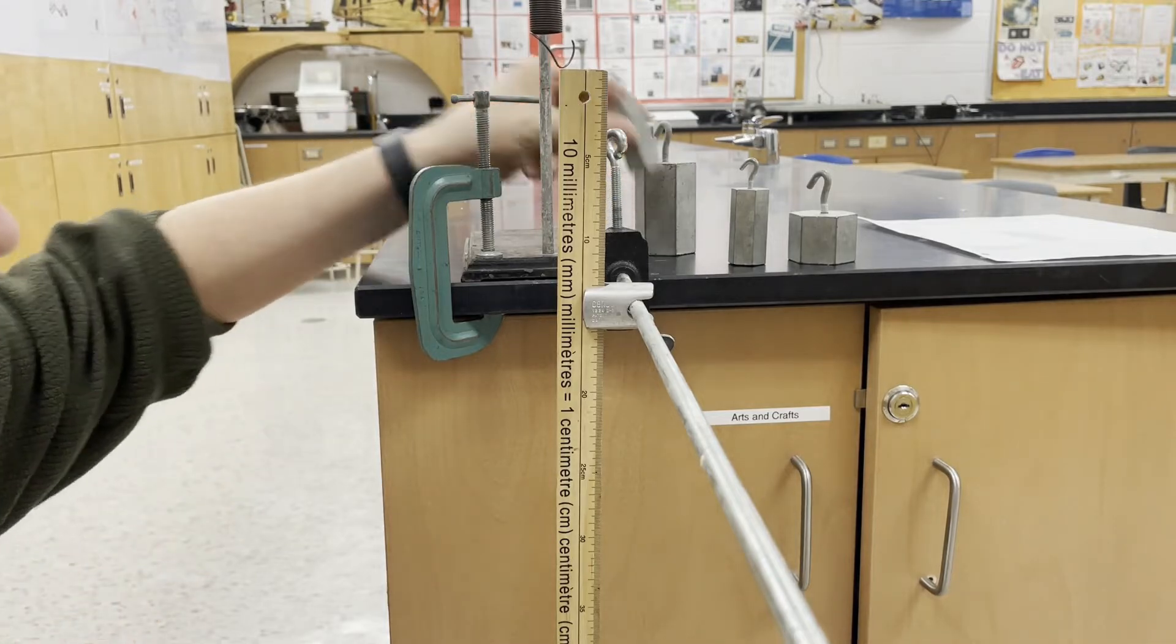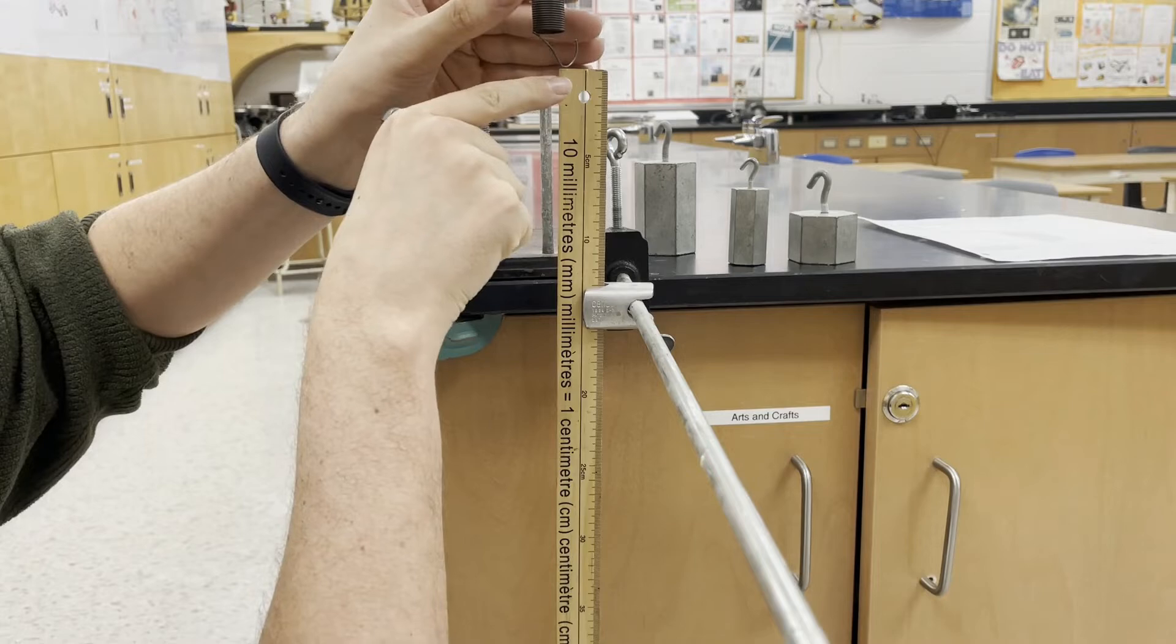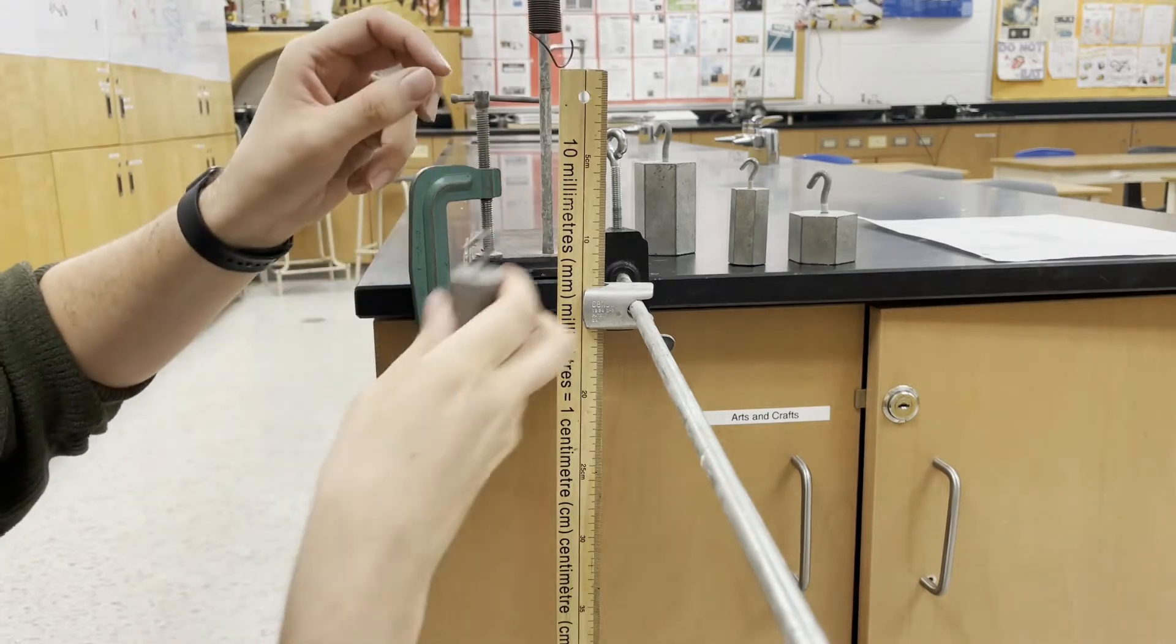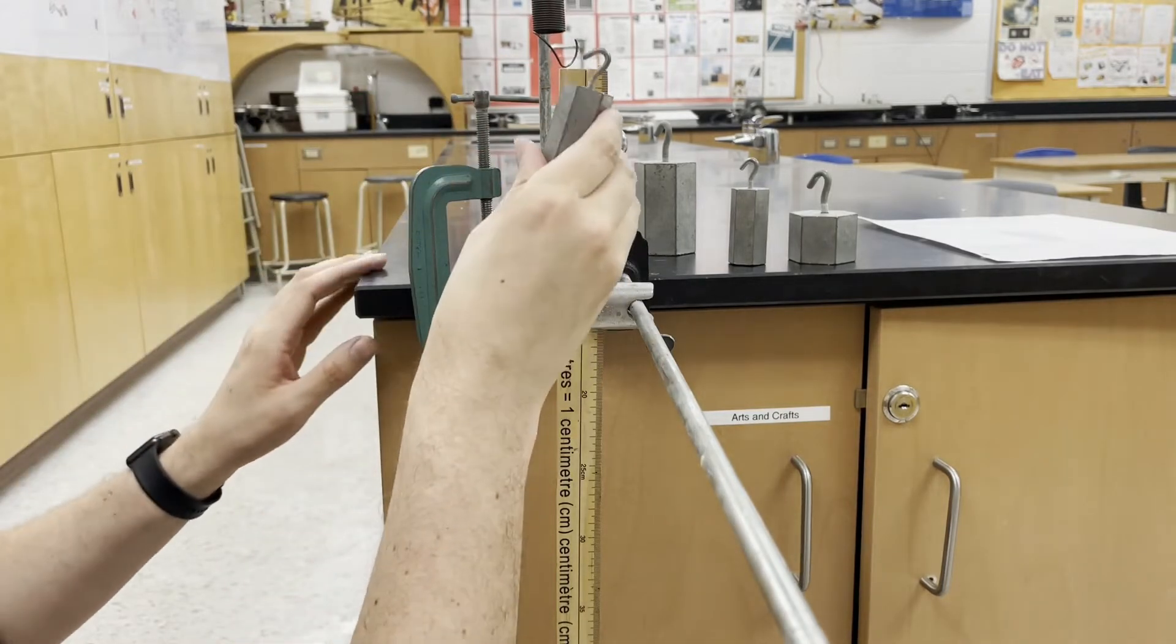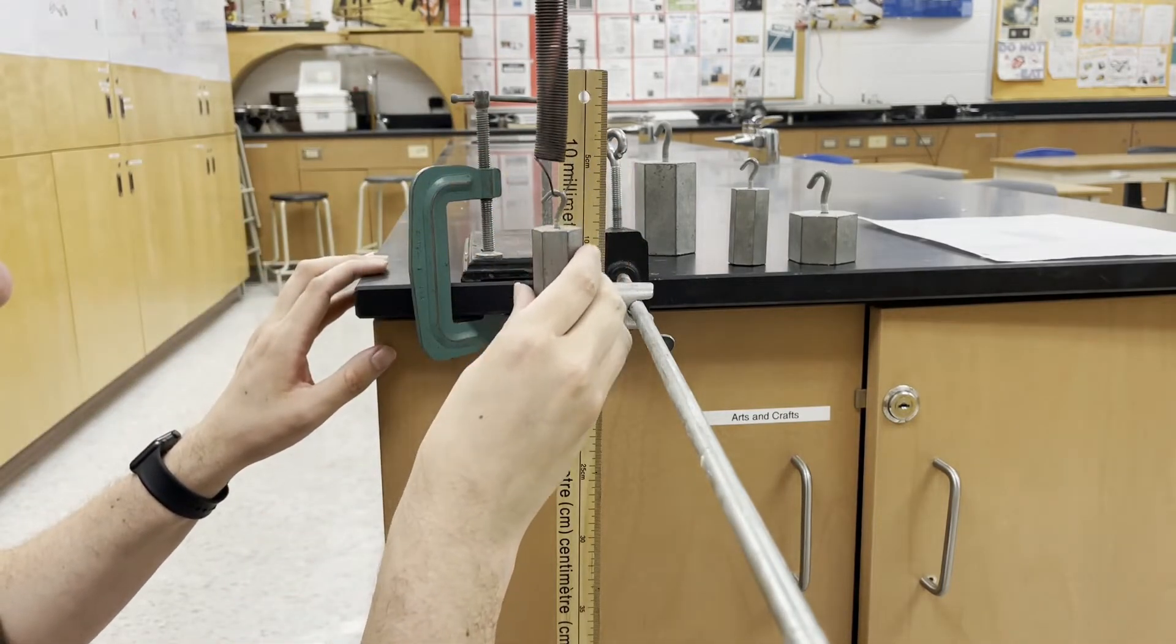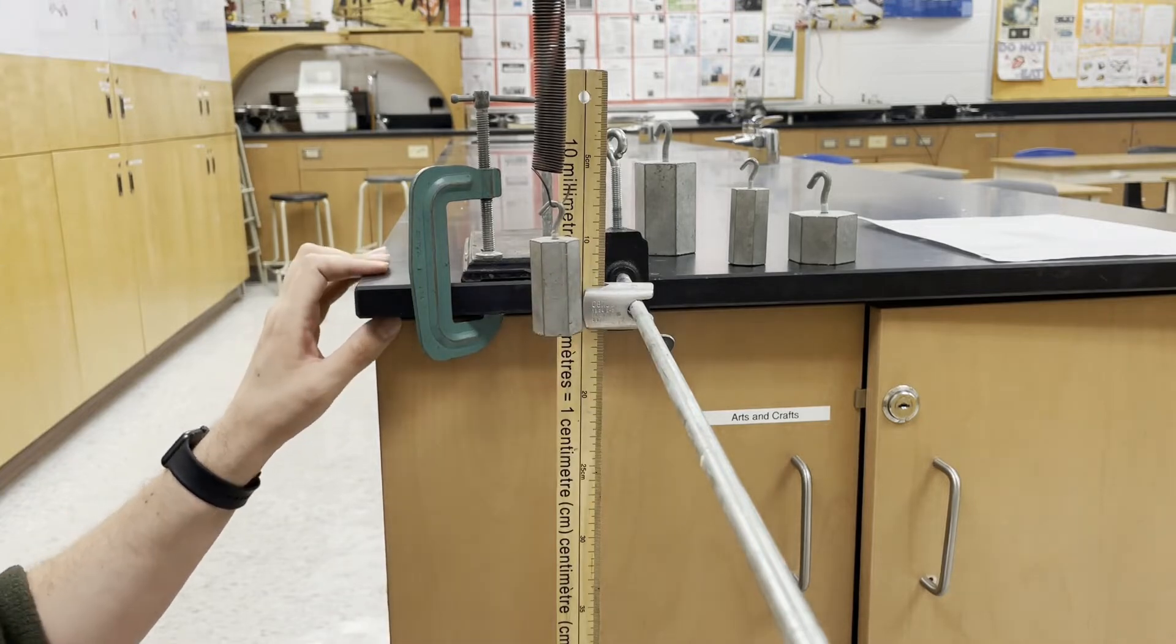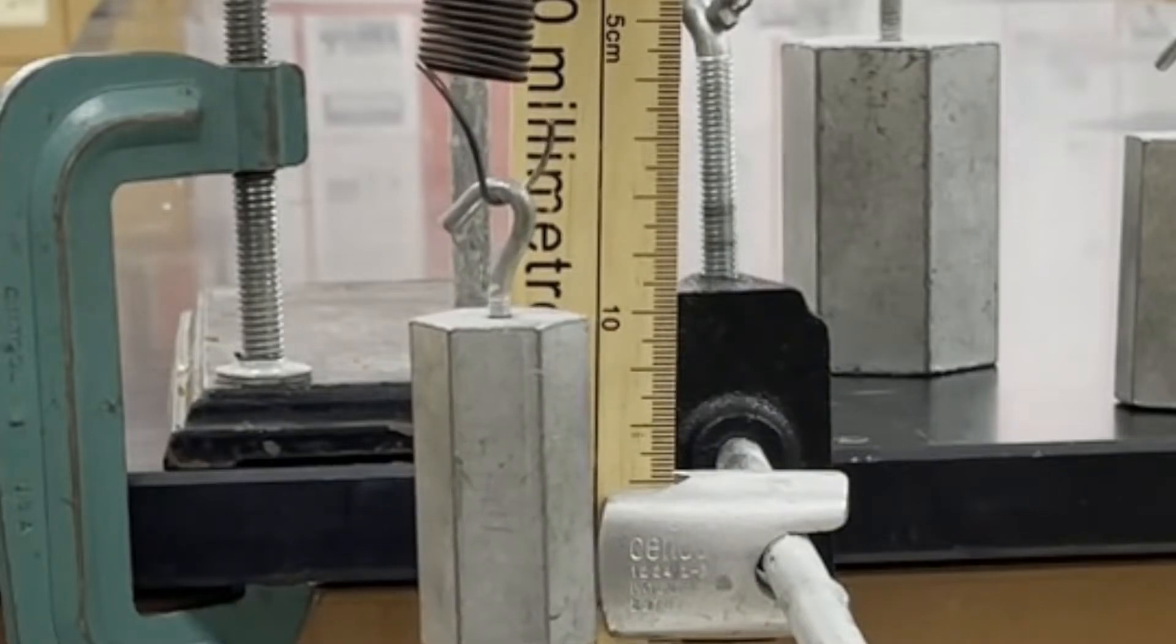Our first mass is going to be 250 grams or 0.25 kilograms. You can see I've made the bottom of the spring right at zero on our meter stick. So let's look where the bottom of the spring goes to when we attach this weight. You can pause the video there and make your measurement.